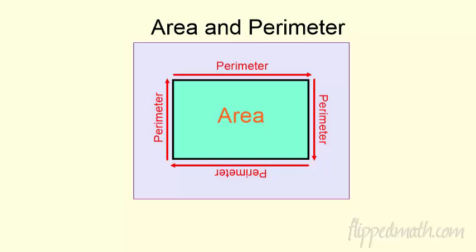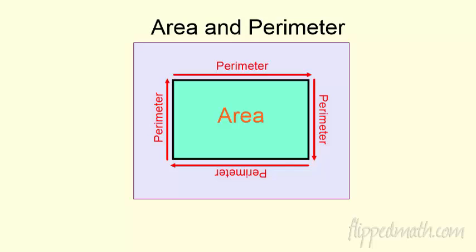All right, here we go. Let's wrap this chapter up with a little area and perimeter. Love this stuff. So we've done this before — just a quick refresher. What is perimeter? Perimeter is the distance around your shape. So if I walk the perimeter of something, I add it all up — like the fencing around it. Versus the area, which is the inside area. We're going to see how that relates to similarity. Should be pretty awesome.